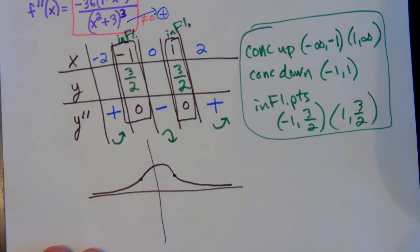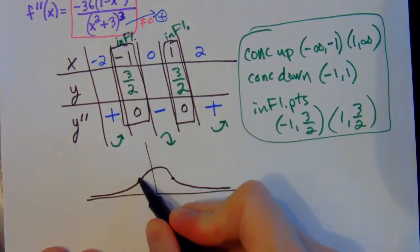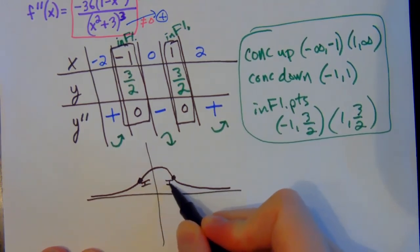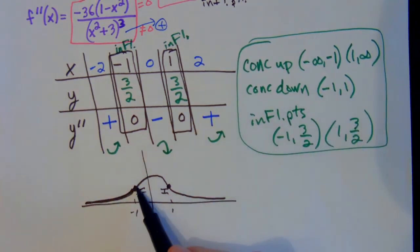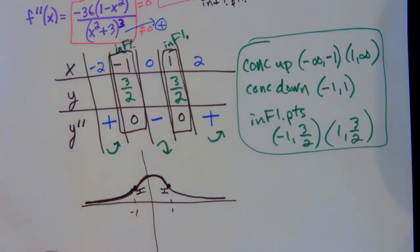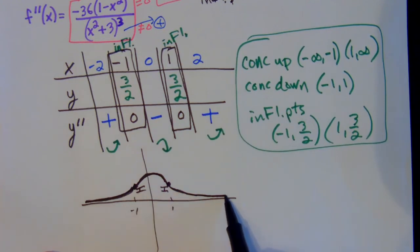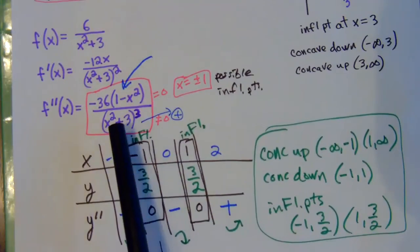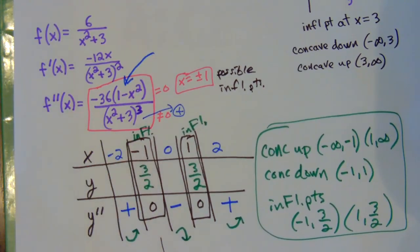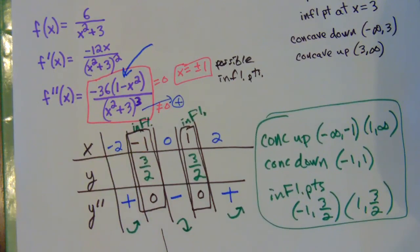Looking at the graph, there's an inflection point at (-1, 3/2) and another at (1, 3/2). From negative infinity to negative one, the graph is concave up — holding water. Between negative one and one it's concave down — spilling water, second derivative negative. From one to infinity it's concave up again. Practice these derivatives and charts; keep working on derivative skills and ask questions as needed.